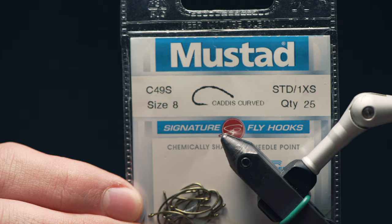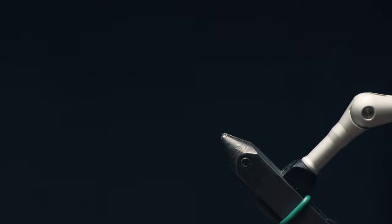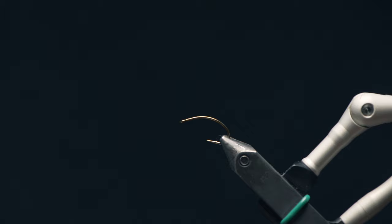This is what we'll tie it on, this is a C49S Mustad in a size 8, so a curved caddis hook. You can just tie this on a regular old nymph hook too though. And you can tie this in a good range of sizes, I would say anywhere from a size 6 to a 10, maybe even a 12. The bugs can be smaller than that, but bigger will probably get more attention from the fish.